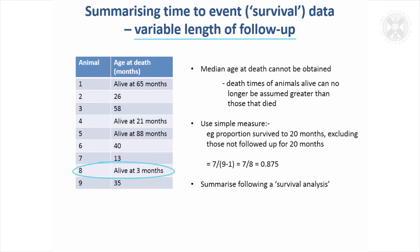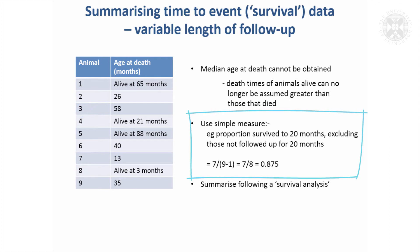One animal — animal eight — was still alive but had only been in the study for three months, so there's very little information. Although we've got five animals that have died, we still can't use this data to get a median, because if we took 58 that's not right — animal eight might have died at four months for all we know. So again we have to use a simple measure: take a time point, maybe 20 months, and state the number of animals that had died at 20 months as a proportion of those that had been followed up for 20 months. Only eight of the animals had been followed up for 20 months, because we don't know what would have happened to animal eight at 20 months.